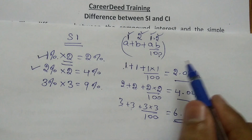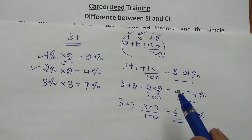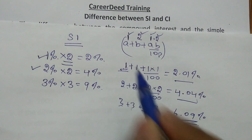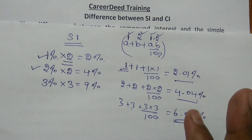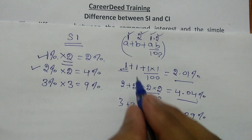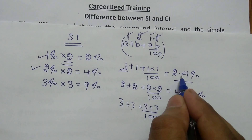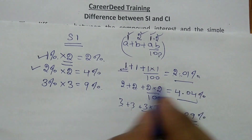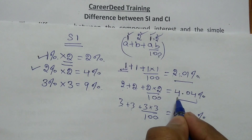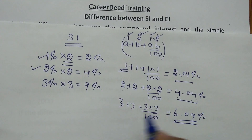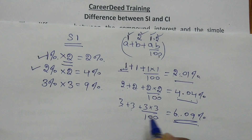Now if you closely observe these numbers: if it is 1% per annum for 2 years, 1 × 2 gives 2, and 1 squared gives 0.01. For 2%: 2 × 2 gives 4, and 2 squared gives 0.04. For 3%: 3 × 2 gives 6, and 3 squared gives 0.09.